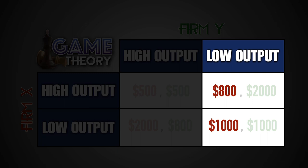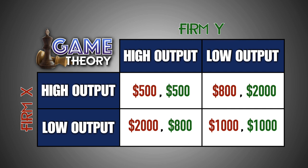Even if Firm Y were to set a low output, Firm X's better strategy is still to set a lower output, because it will earn $1,000 in profit, as opposed to the $800 in profit it would have earned had it decided to set a higher output. As a result, because Firm X will earn greater economic profits by producing less output, regardless of what Firm Y decides to do, Firm X's dominant strategy is to set a low output level, and will therefore produce less.